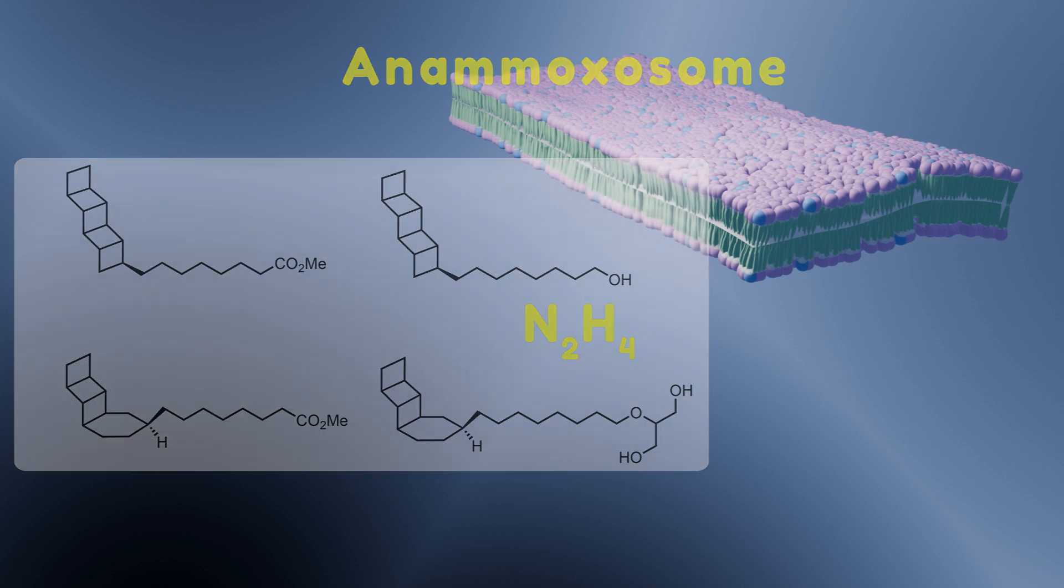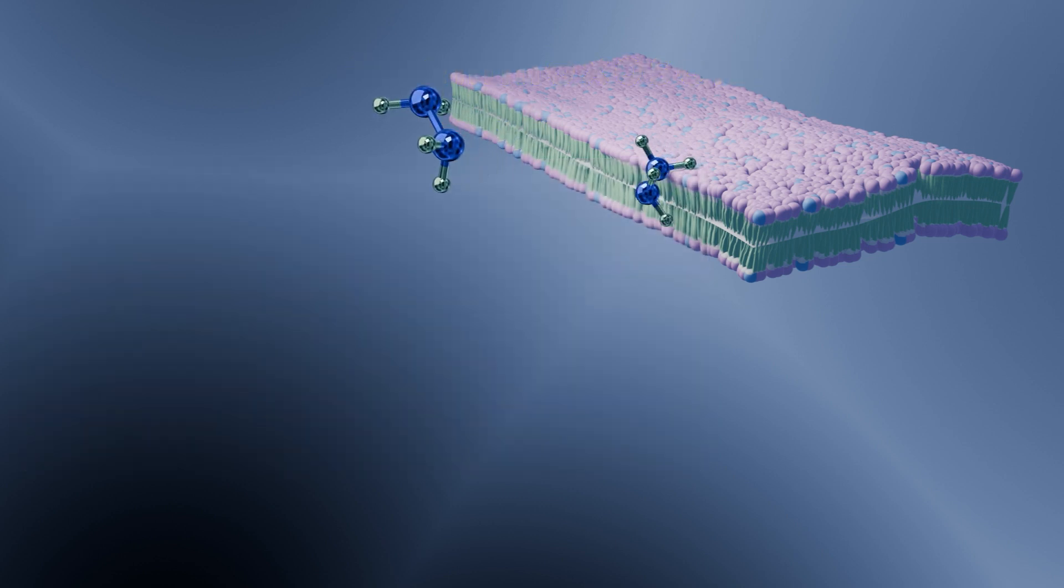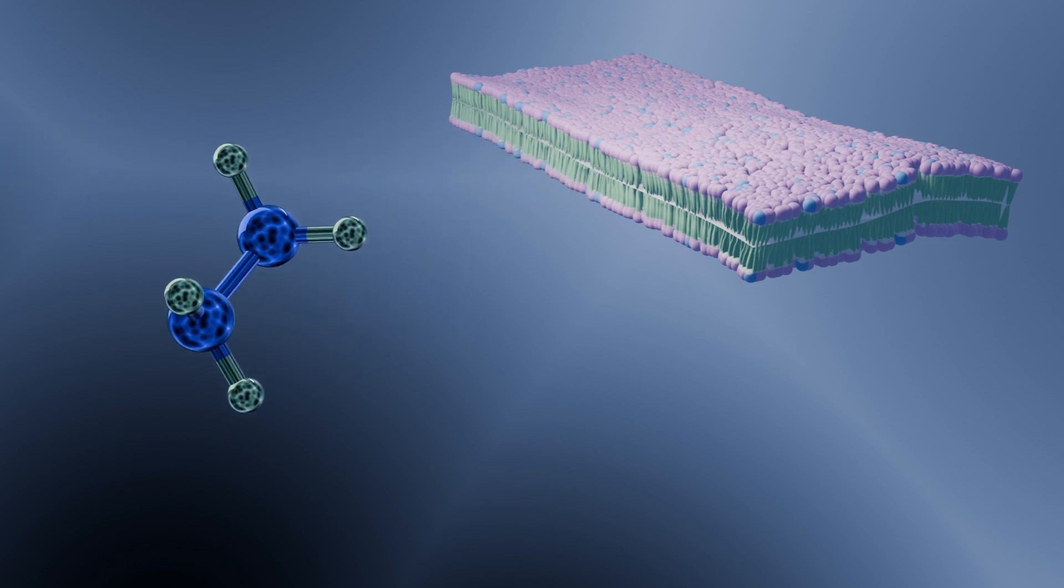The diffusion of hydrazine across membranes represents significant energy loss for the cells. The ladderane lipids appear to be an adaptation to this problem posed by anammox metabolism.